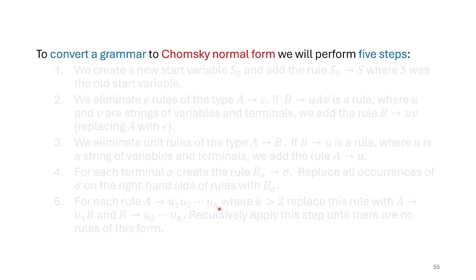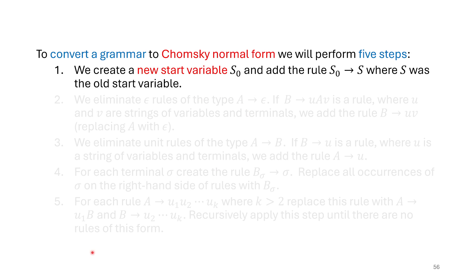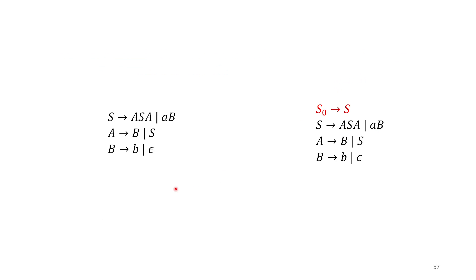There are five steps we need to perform. We start by addressing the start variable: we need a new start variable so we can ensure it doesn't appear on the right-hand side. We create a new rule S0 goes to S, where S was the old start variable. In our grammar, S does appear on the right-hand side of some rules, which isn't allowed. So we create this new rule, and S0 becomes our start variable. It doesn't appear on the right-hand side and simply leads into the old grammar. This also introduces a unit rule that we'll fix in a later step.